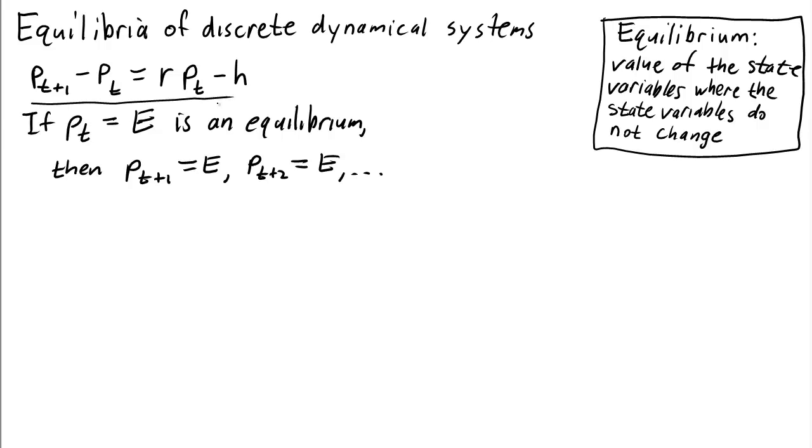For this equation here, let's look for the equilibrium. Let's look for the case where P_t is the same as P_{t+1}, they're all equal to e. So what we'll do is replace all the state variables with the equilibrium value e. So we have P_{t+1}, well that's e, minus P_t, well that's e again, is equal to r times P_t, or e, minus h.